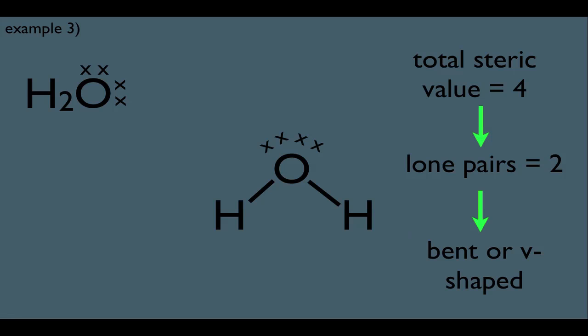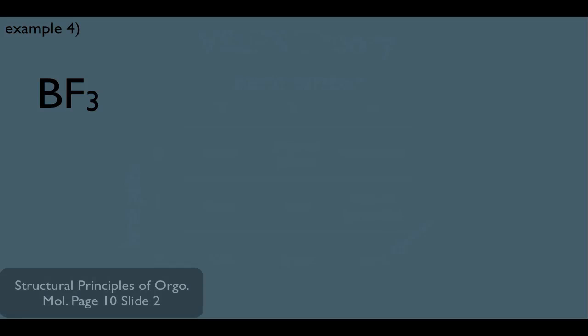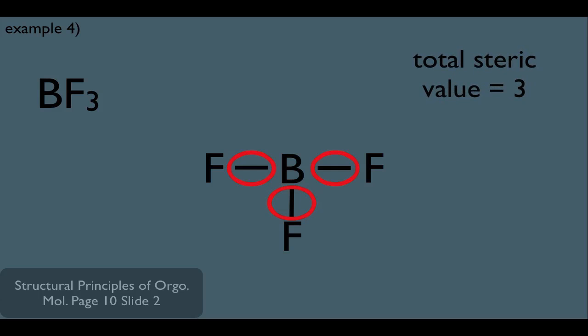Let's look at another example to make sure you got this. Here is example 4. What is the geometry of BF3? Well, again, first, this happens to be his Lewis dot structure. And determining his steric value, we get 1, 2, 3. So, he has a steric value of 3, which means he happens to be sp2 hybridized. He also happens to have no lone pairs. So, his lone pair count is zero.